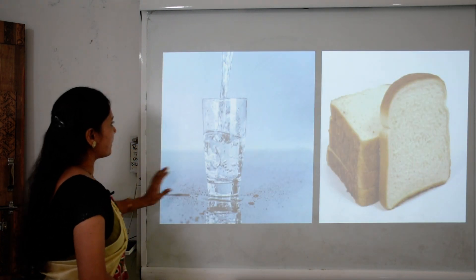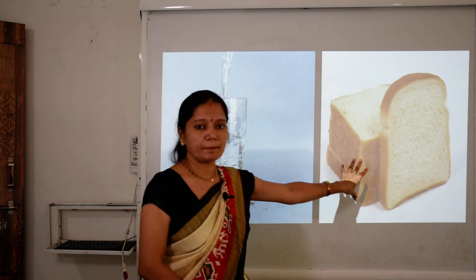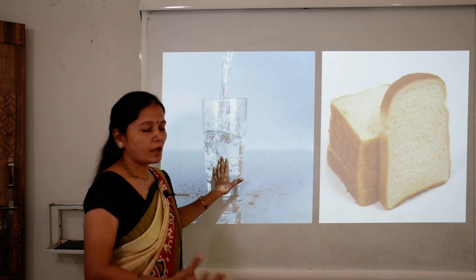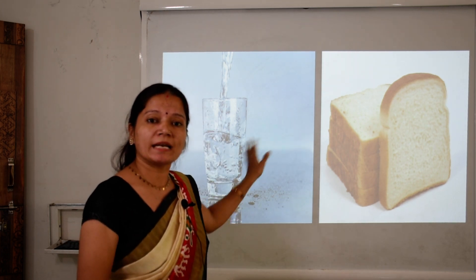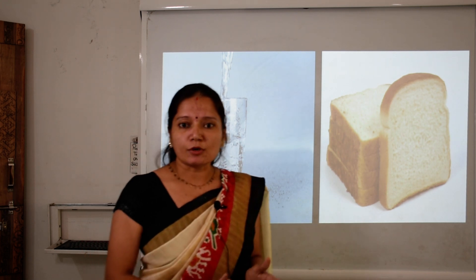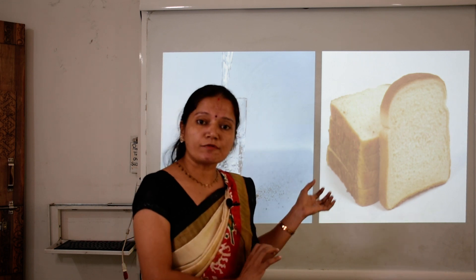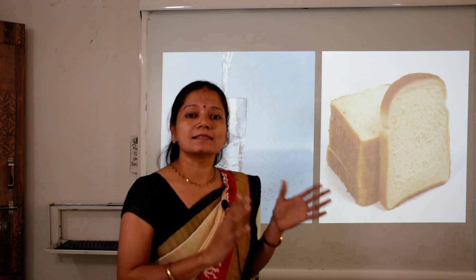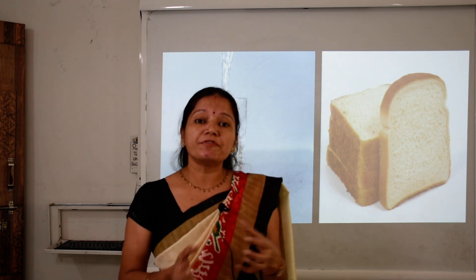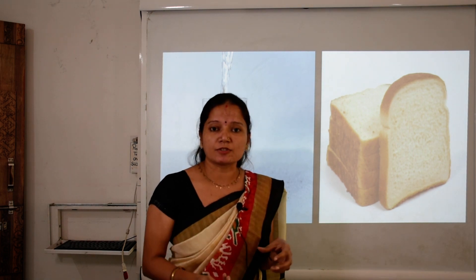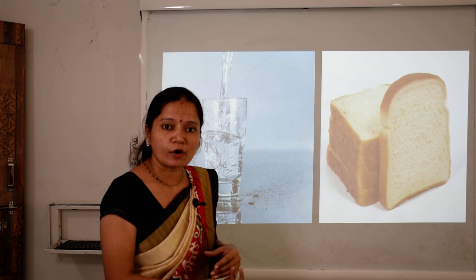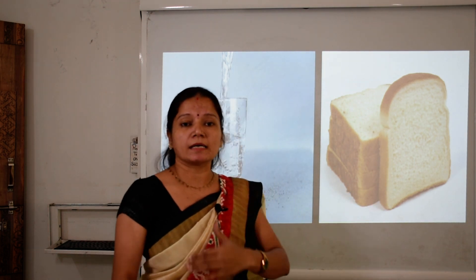Let's understand this with one more example. Here is a glass of water and a bread slice. We cannot count water in the glass, but we can count a glass of water — one glass, two glasses, three glasses. So 'a glass of water' is countable, but 'water in the glass' is uncountable. Similarly, 'bread' is uncountable, but 'a slice of bread' is countable — one slice, two slices, three slices.